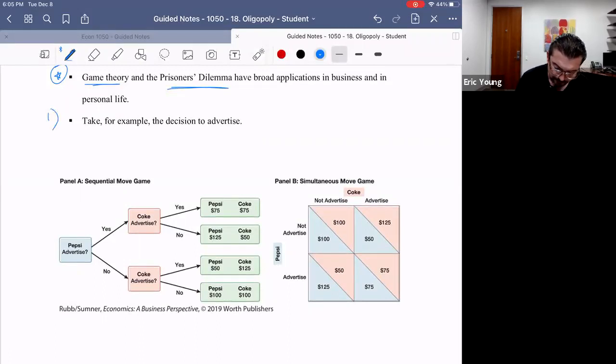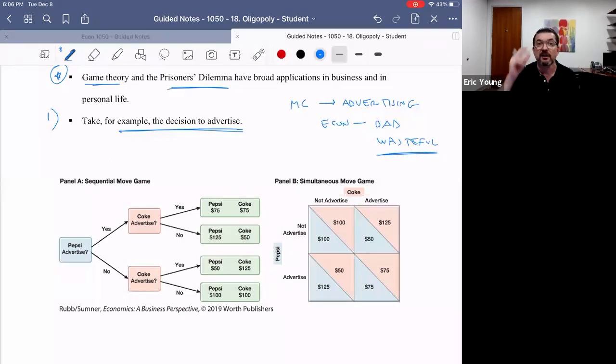What are some of the applications? Well, there's many. I'm going to wrap this video up by giving you just one example, and this is the decision to advertise. Now in our last video series on monopolistic competition, you recall that we introduced advertising, and you might recall that at the end of that video, we asked the question: is advertising good or bad? And some economists feel—not all, but some economists feel—that advertising is bad primarily because it's wasteful.